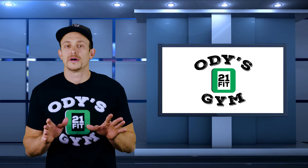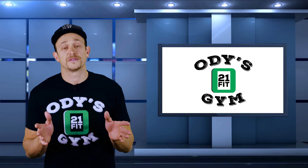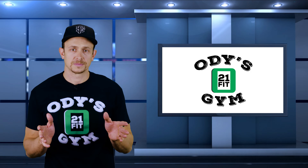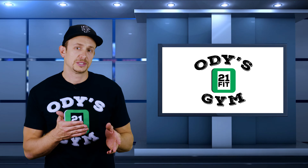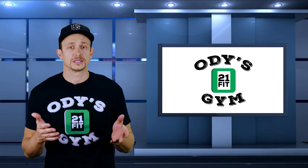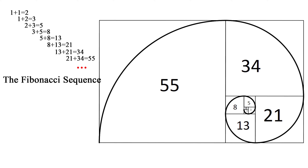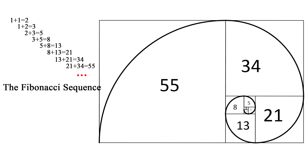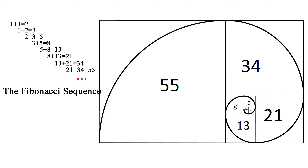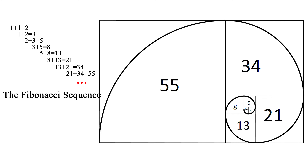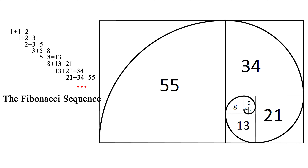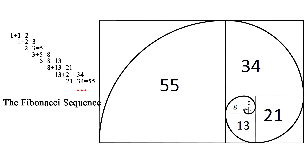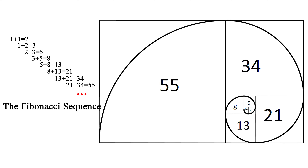Let me give you an example of how this relates to the Fibonacci sequence. The Fibonacci sequence goes like this: 1, 1, 2, 3, 5, 8, 13, 21, 34, 55, etc.